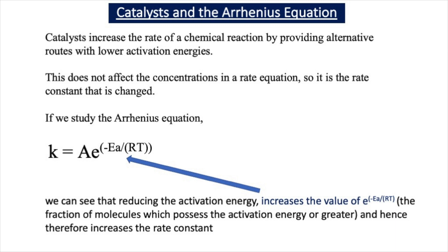The Arrhenius equation helps us understand why catalysts increase the rate of a reaction. Catalysts provide alternative routes or mechanisms with lower activation energies, and this does not affect the concentrations in a rate equation — it is the rate constant k that is changed when you add a catalyst. Looking at k = Ae^(-Ea/RT), we can see that reducing the activation energy increases the value of e^(-Ea/RT), which represents the fraction of molecules possessing the activation energy or greater, and hence increases the rate constant.